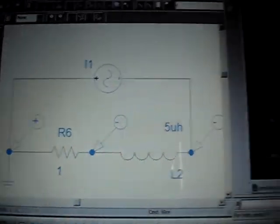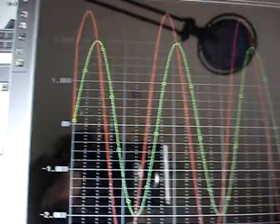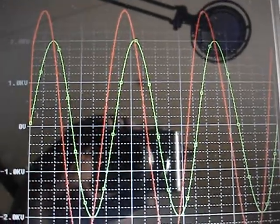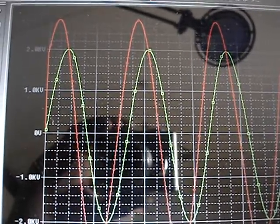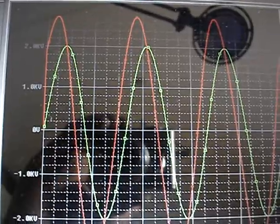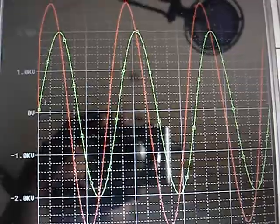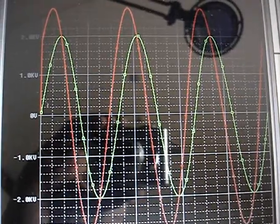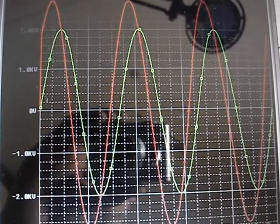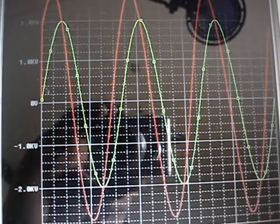The resistor alone would produce the green signal, which would be in phase with the primary current. But the combination of the resistor and the inductor makes the red signal. And this signal leads the current by a couple of microseconds.